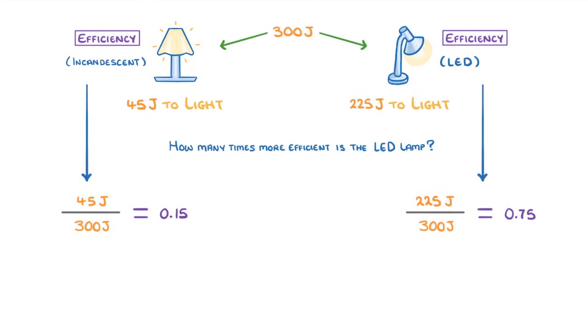For the LED, we do 225 divided by 300 to get 0.75. To find how many times more efficient the LED lamp is, we divide 0.75 by 0.15, which gives us 5. So the LED lamp is 5 times more efficient. If we wanted these in percentage terms, we multiply by 100, giving 15% and 75%. Then 75 divided by 15 gives us 5 again.